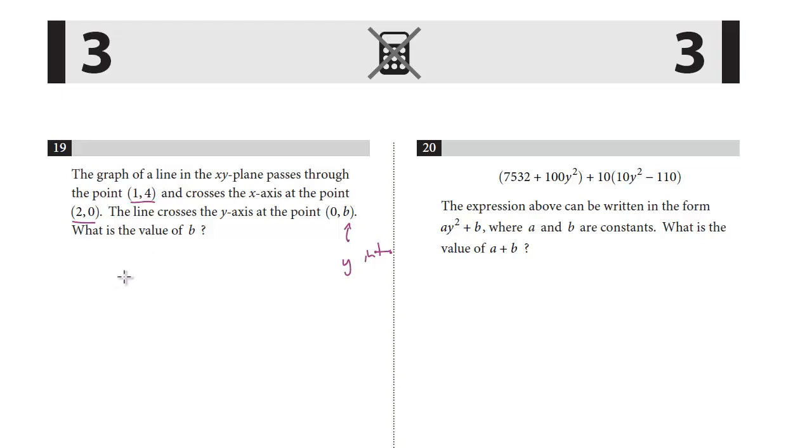We have two points on a line, so we can simply use the slope formula. With points (1,4) and (2,0), the change in y over the change in x is 4 minus 0 over 1 minus 2. This gives us 4 over negative 1. The slope is negative 4.